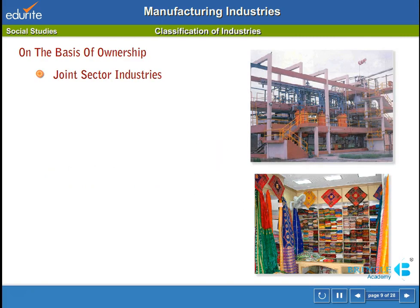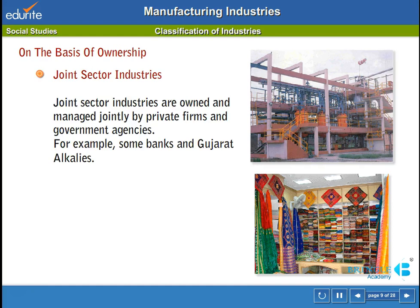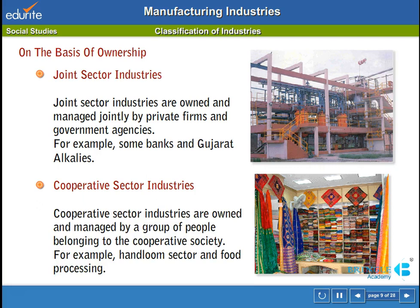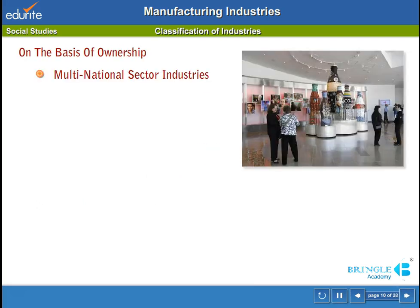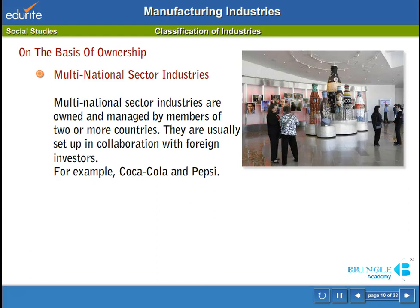Joint sector industries are owned and managed jointly by private firms and government agencies, for example some banks and Gujarat Alkalies. Cooperative sector industries are owned and managed by a group of people belonging to the cooperative society, for example the handloom sector and food processing. Multinational sector industries are owned and managed by members of two or more countries. They are usually set up in collaboration with foreign investors, for example Coca-Cola and Pepsi.